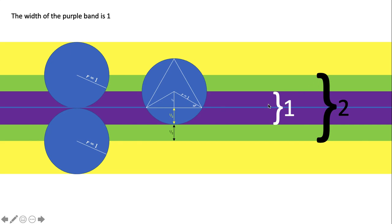And the chord ends up being longer than the base of the triangle if the center of the circle is within the purple band, one unit.